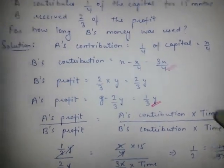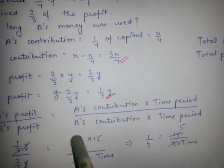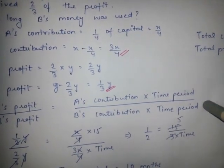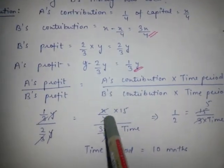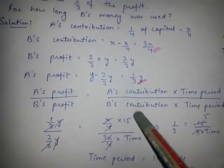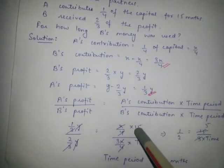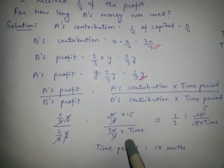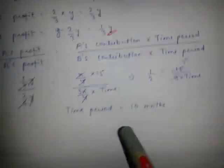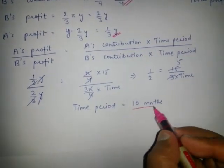Substituting the values: (1/3)Y divided by (2/3)Y equals (X/4 × 15) divided by (3X/4 × T), where T is the time period we need to find. 15 is the number of months A invested. After solving, we get the time period T equals 10 months. This is our final answer.